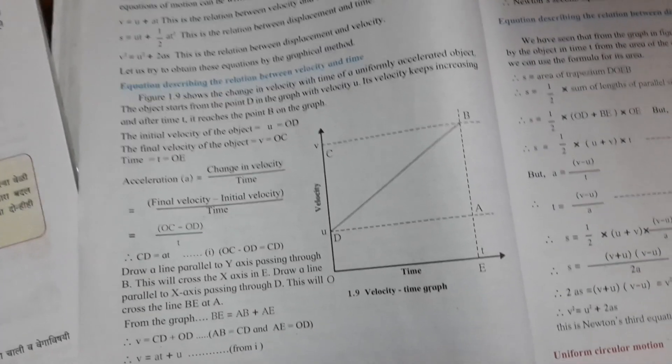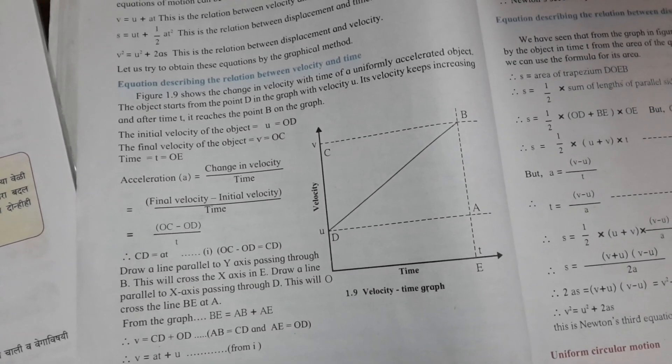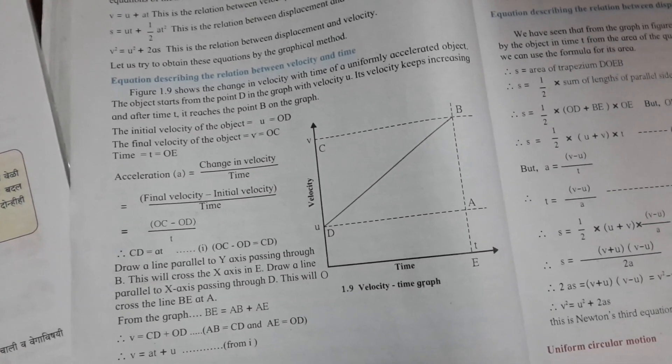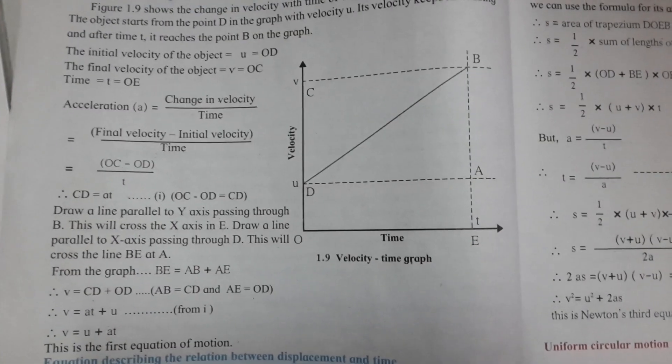So CD equals the change in velocity, because OC minus OD equals CD.